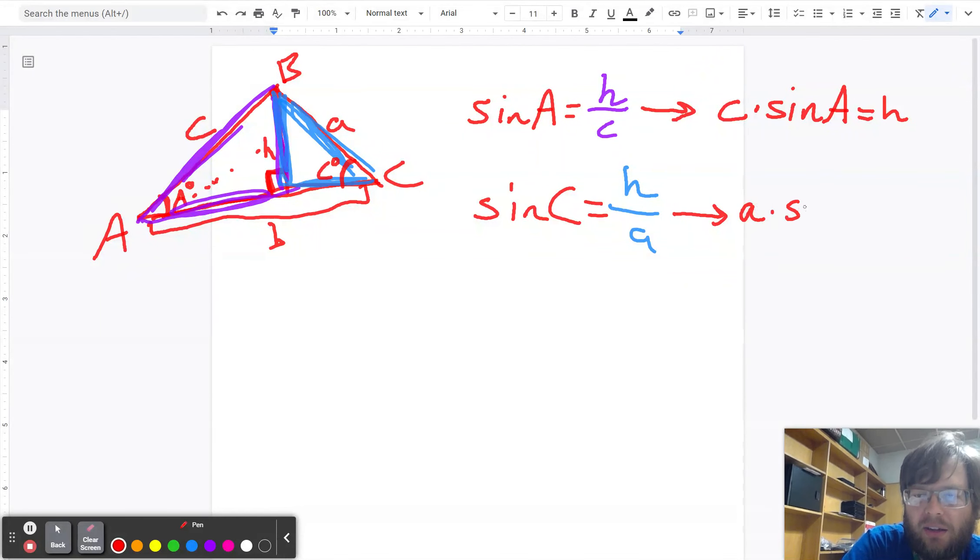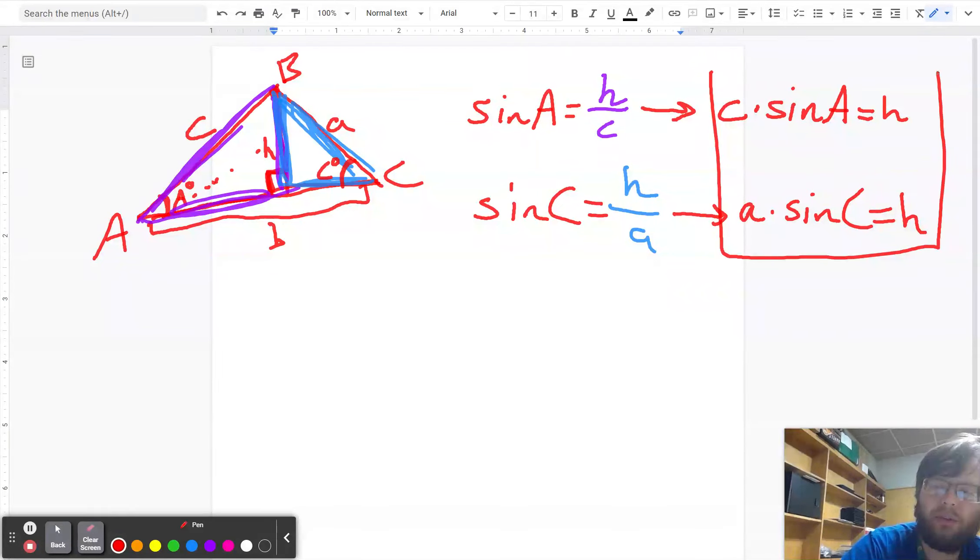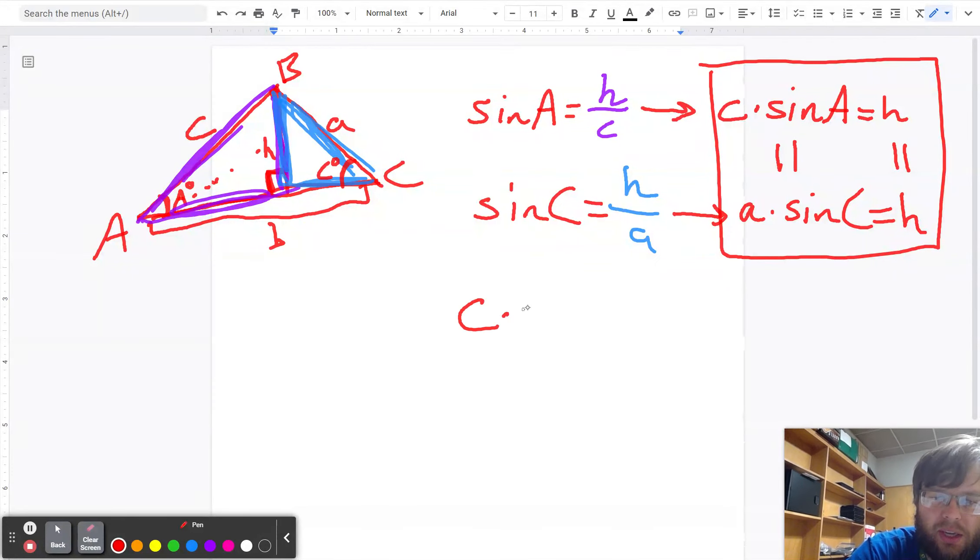Each, these two expressions are both equal to H. And so I'm able to substitute. When I have two things that are equal to H over here, so H equals H, I can conclude that these two things equal. And then we get most of the sine rule. C times sine of A equals A times sine of C.